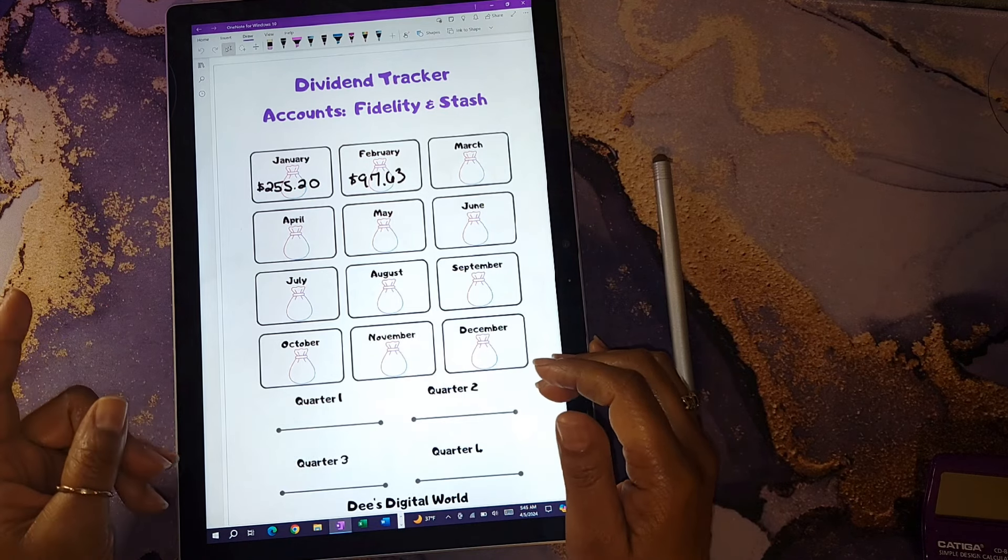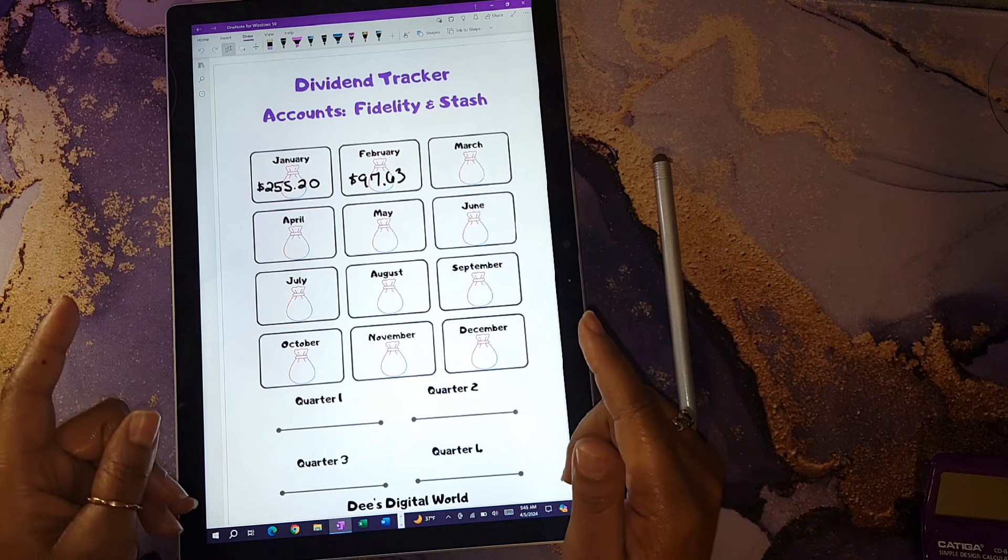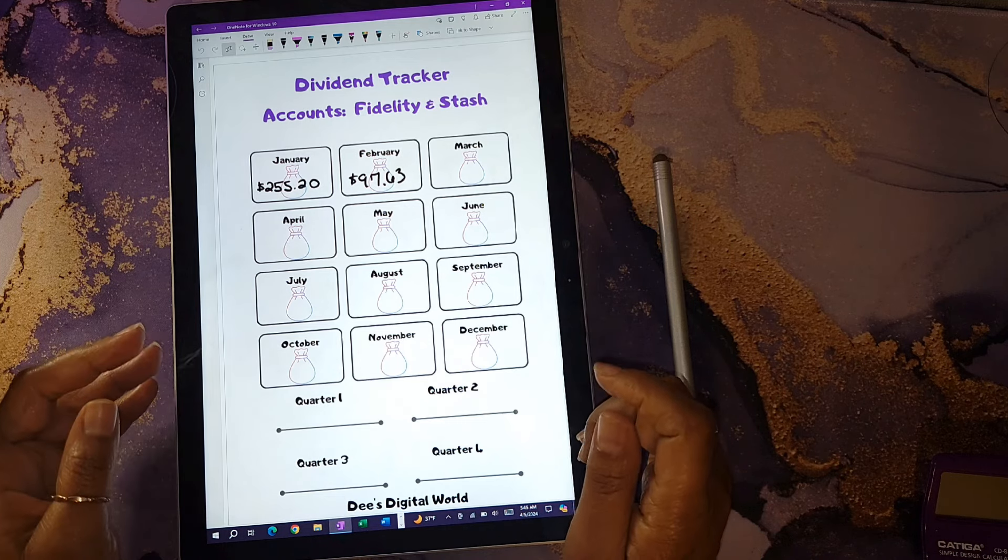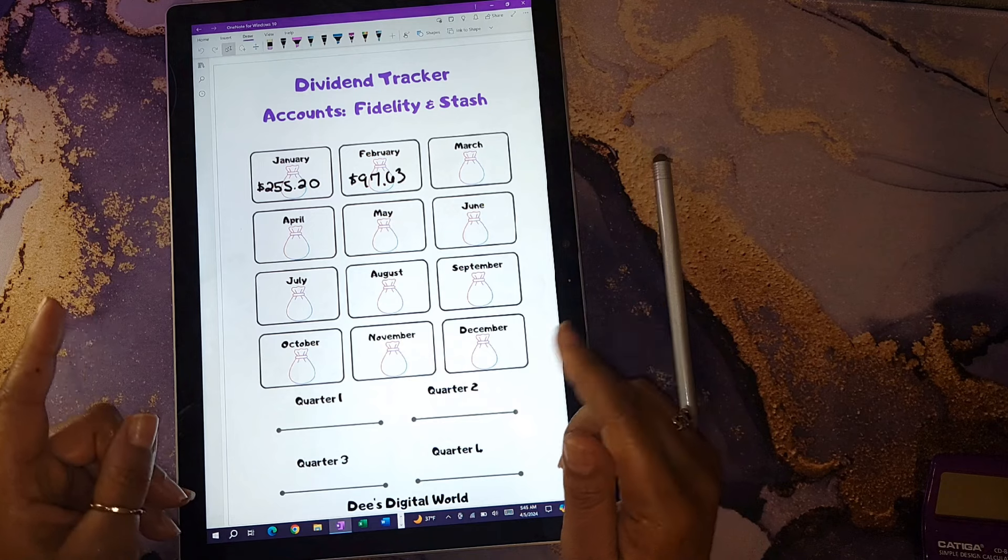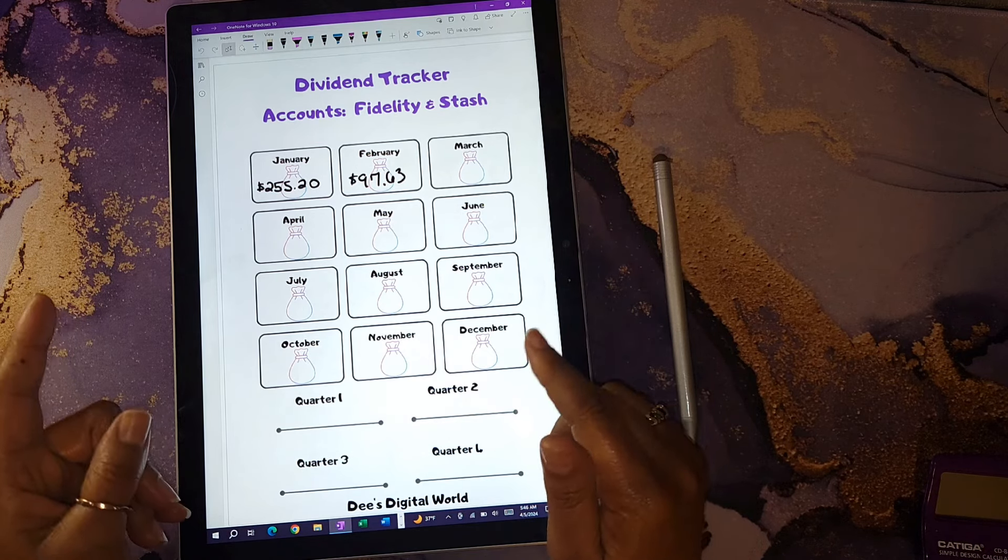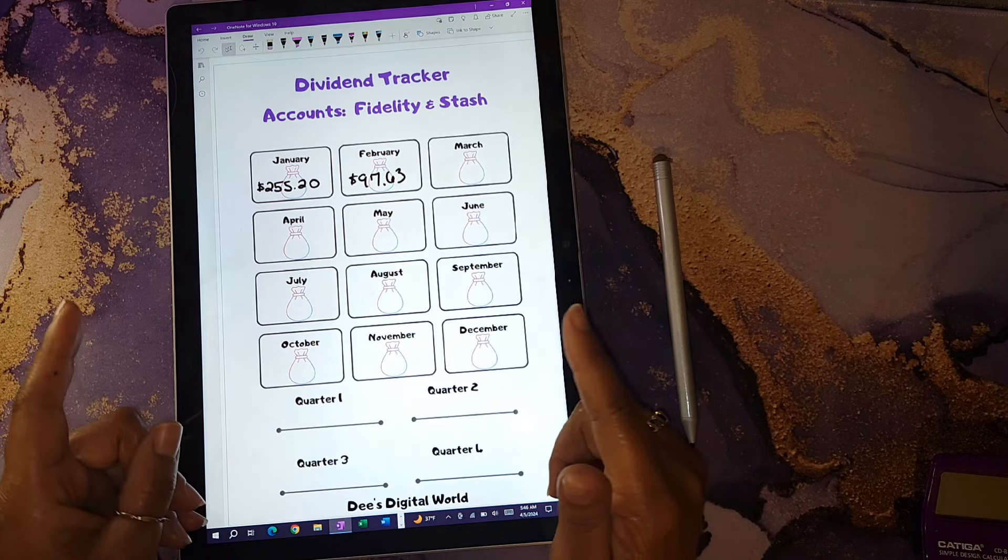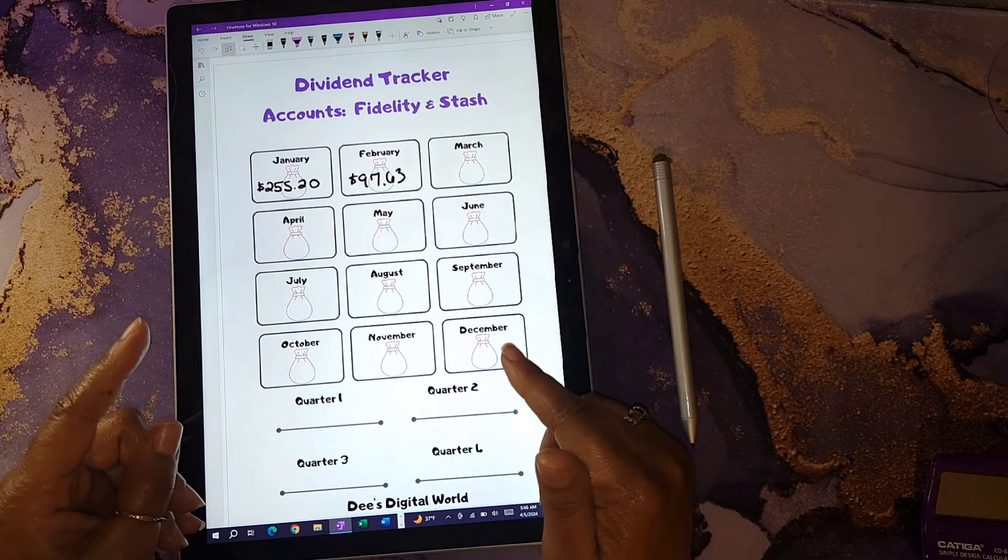This is my next tracker I use to give me a snapshot of how much I was able to make in the month for my dividends. As you see, in January I made $255.20, and in February I made $97.63. Now I do have most of my dividends reinvested, except for my HSA.